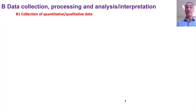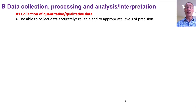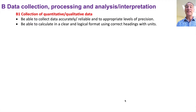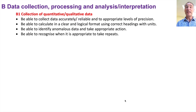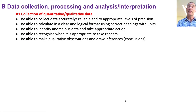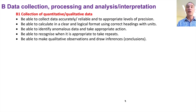The second part is data collection, processing and analysis or interpretation of results. The first thing tested is whether you can collect qualitative and quantitative data accurately and reliably using repeat results and good precision. Can you calculate in a clear logical format using correct headings and units to process that data? Can you identify anomalous results and take appropriate action by ignoring them and repeating them? Can you recognise when it's appropriate to take repeat results? Be able to make qualitative observations and draw inferences — which is a technical name for conclusions — such as how smoky a flame is when burning fuels or what colour the flame is. Qualitative means it doesn't have numbers.